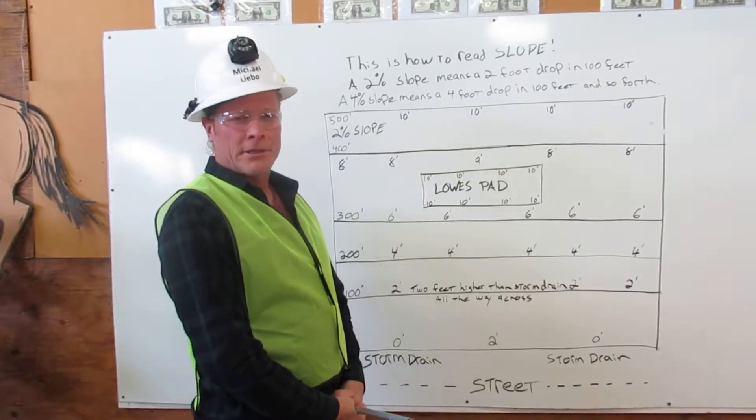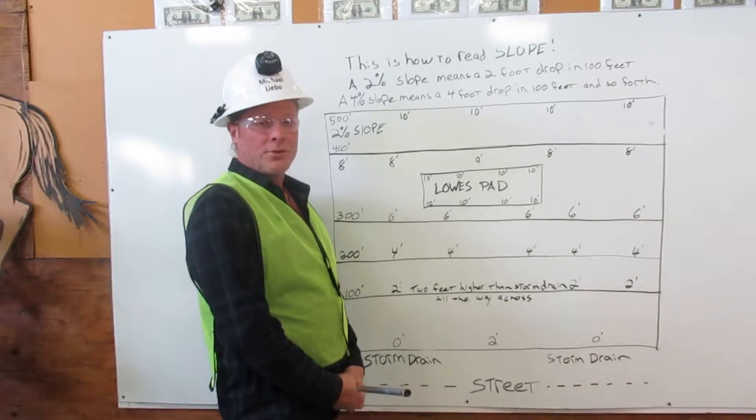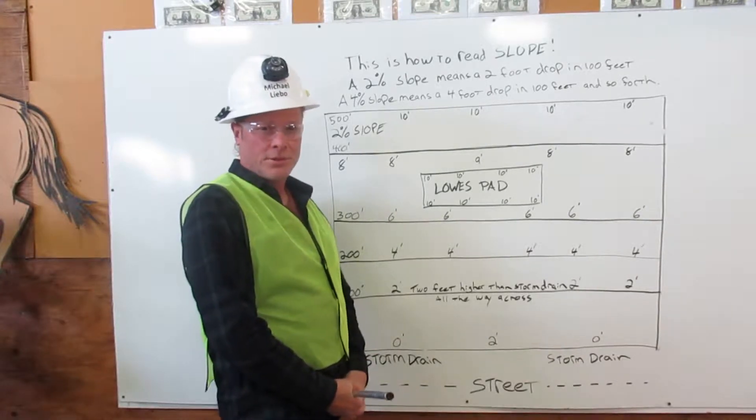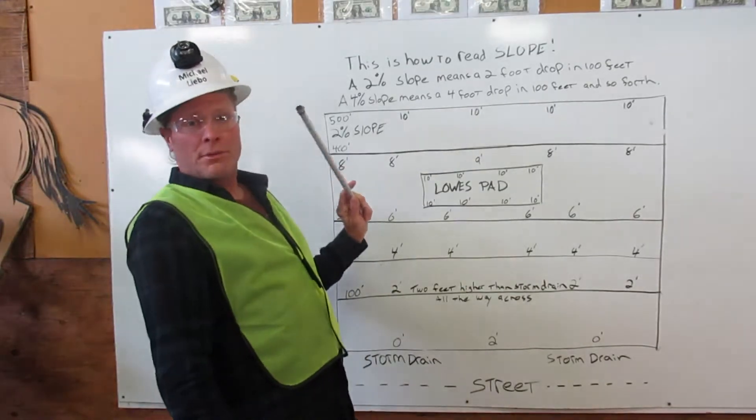I'm Michael Lebo, construction math certified. I'm going to demonstrate how to lay out a 2% slope using a parking lot example. Let me show you.